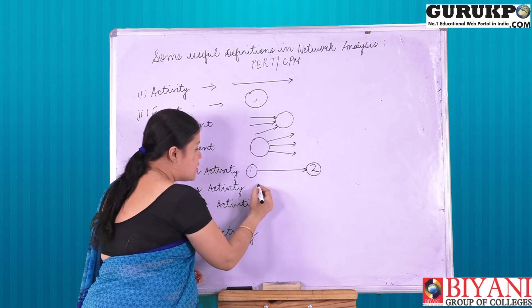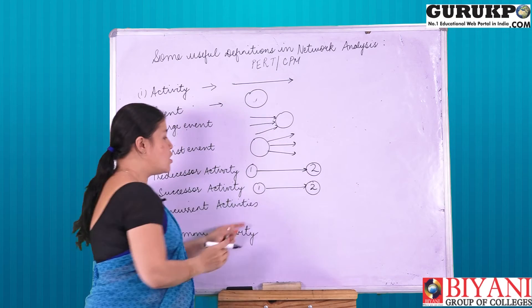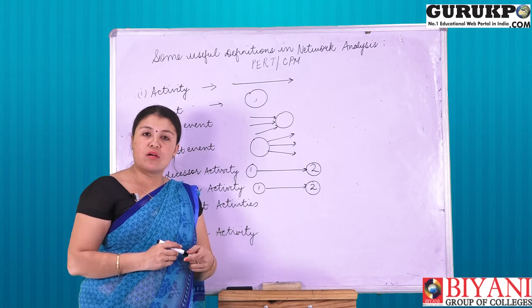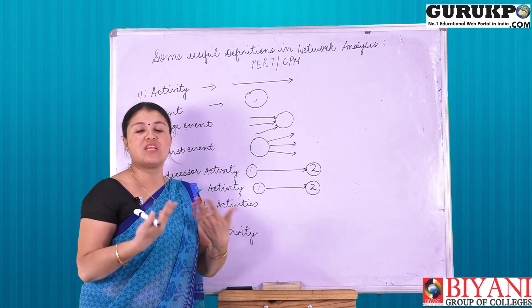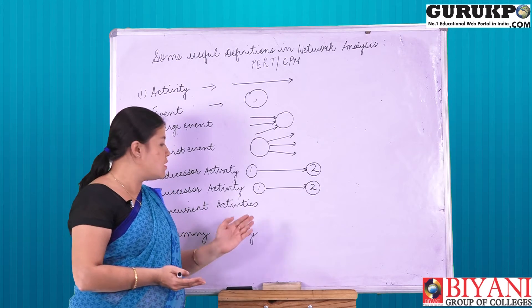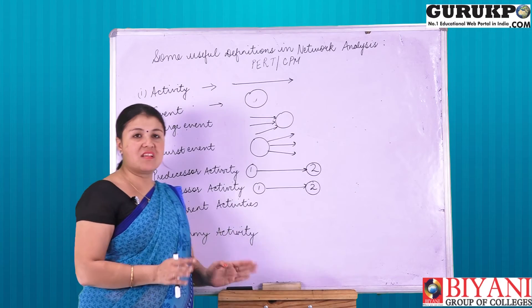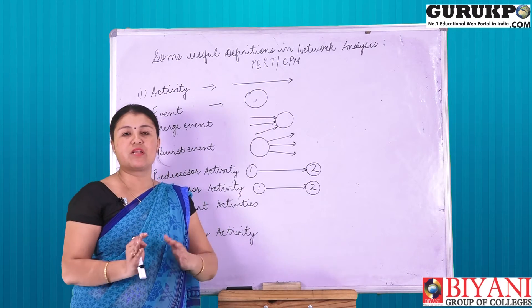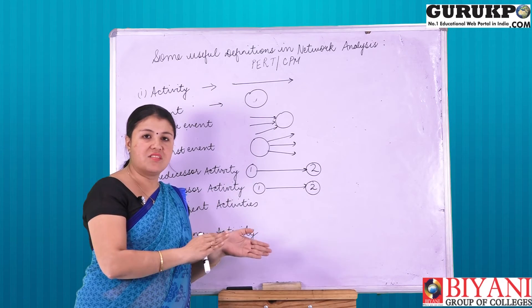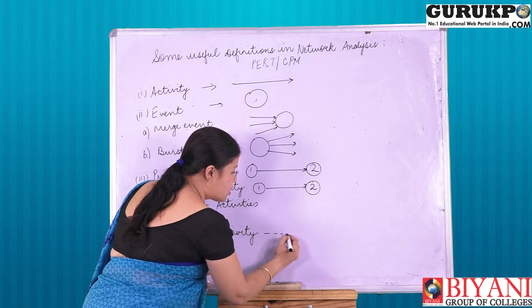Next is successor activity. For activity one, the successor activity is two. Next are concurrent activities. Concurrent activities are those activities which can be started simultaneously by using the same resources and time. The last one is dummy activity. A dummy activity is basically an illusion — it does not connect to another activity but merely shows a connection between one activity or event to another. It is indicated by dotted lines.